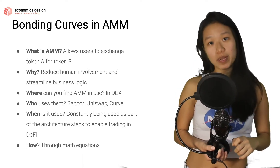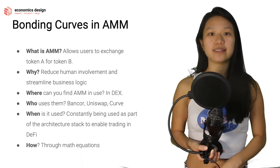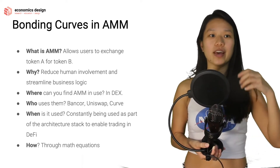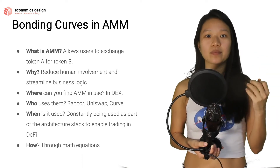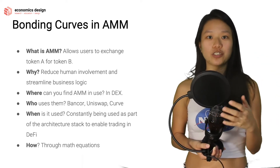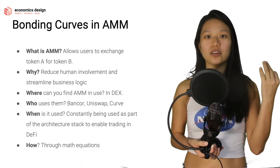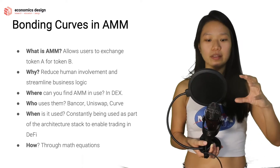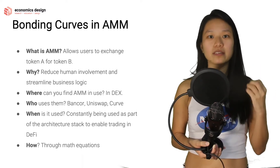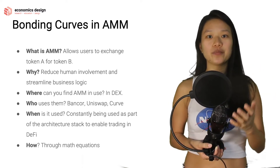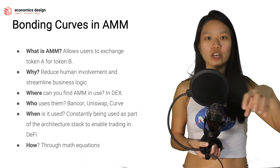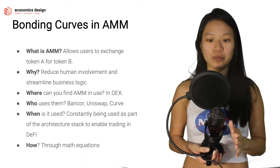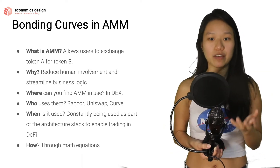Where can you find Automated Market Makers? You can find them in decentralized exchanges. Centralized exchanges are things like FTX or Binance, while decentralized exchanges are things like Curve, Balancer, Bancor, and Uniswap. This is where things get a lot more interesting, because in a decentralized exchange, you don't have anyone controlling the protocol or the system. Everything is transparent and owned by the community.